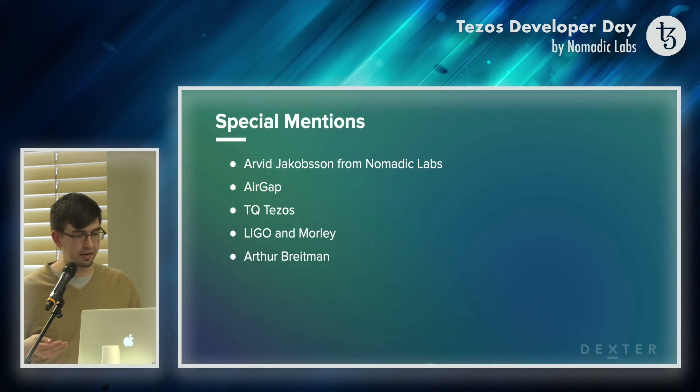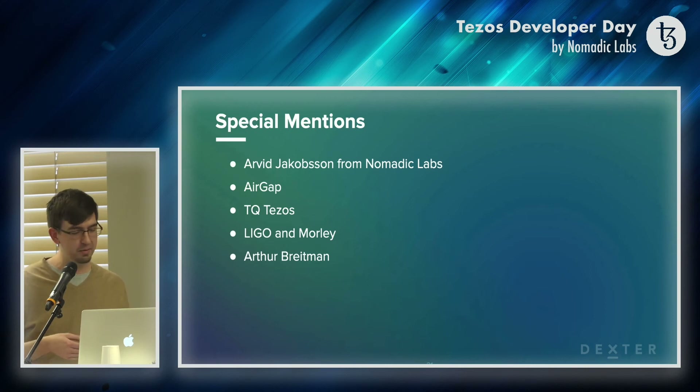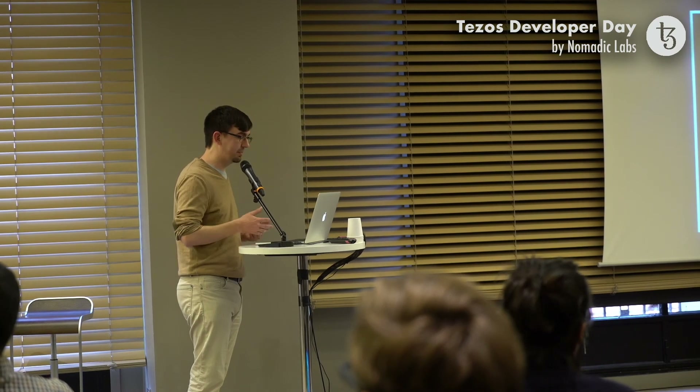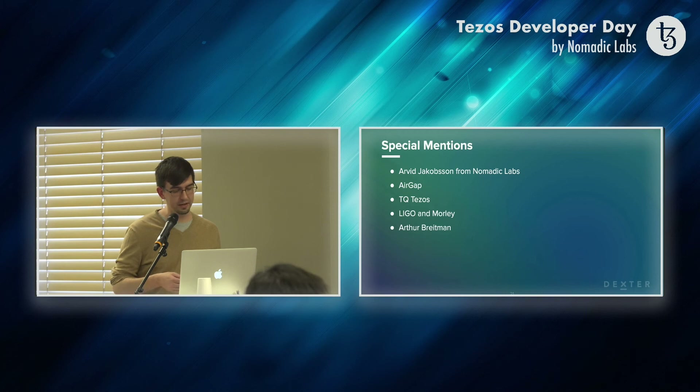I'd like to mention a few people. Yes, CamelCase has been working on this, but we've also been working in conjunction with others. First I'd like to mention Arvid — he's in the audience — who's been working on the formal specification and having a lot of conversations with us about gaming issues and problems he sees in the contracts. It's nice to have a third party not involved in development review the code. Also, AirGap is working on Beacon, which will be a nice way to have a wallet in Chrome and interact with dApps in websites. TQ Tezos has been working on the token standards and has helped us a lot with getting in touch with interested parties. We've used LIGO and Morley to develop these contracts. And finally, Arthur Breitman has been involved in discussing a lot of the game theory issues.